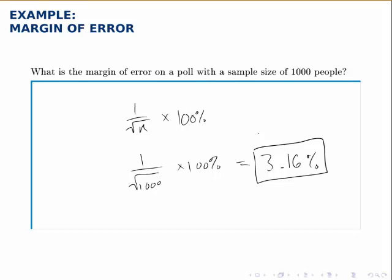It's fairly common for a poll to have a margin of error of around three percent, and when you see that, you can tell that the sample size is around a thousand people.